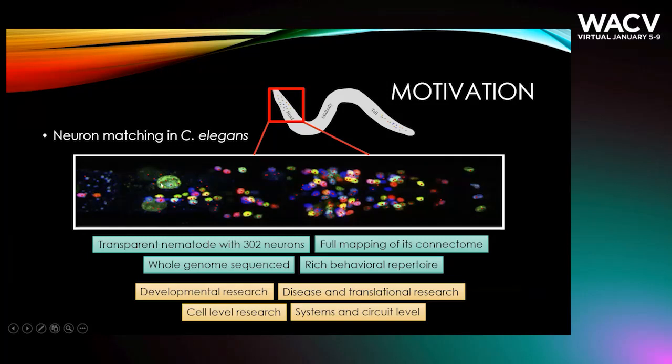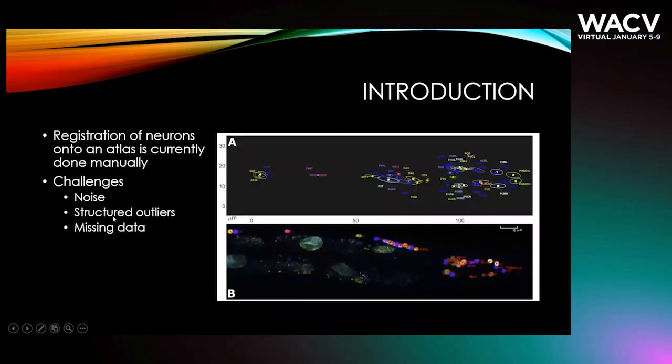But for example, this green spot here is not a neuron, this is just a biological artifact. This is what we call structured outliers, that the outliers are not just uniformly distributed in space, but they have some structure in them. And finally, we might actually have missing data as well. There might be some neurons that do exist in this atlas but do not exist in this image. So this is a distinction that we made between outliers and missing data.